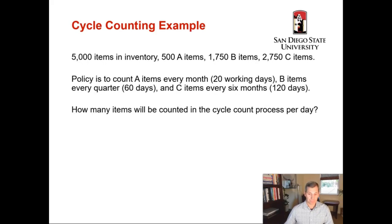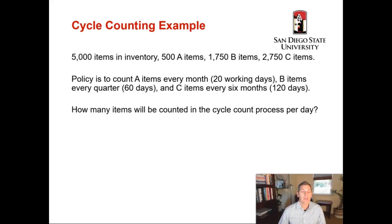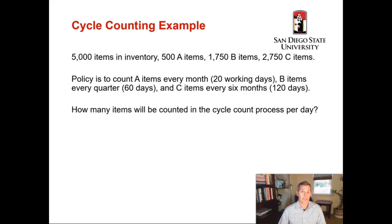Here is an example of cycle counting. Let's say we have 500 A items, 1,750 B items, and 2,750 C items, giving us a total of 5,000 items in inventory. Our policy is to count A items every month, which is 20 working days; B items every quarter, which is 60 days; and C items every six months, which is 120 working days. So how many items will be counted in the cycle count process per day?